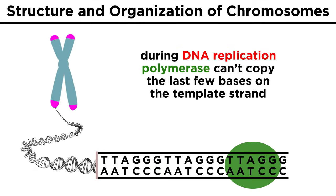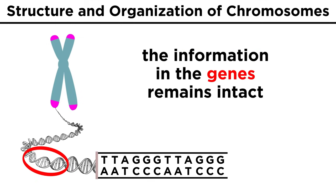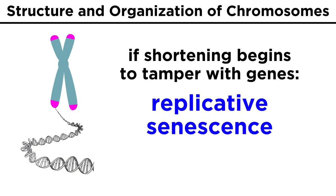This is because with every round of DNA replication, the enzymes involved can't quite copy the last couple of bases, so this extra padding is present so that even after many rounds of replication, the ends haven't shortened so much that the genetic information within an actual gene starts to get eroded away, which would be harmful to a cell. If this does happen, it is called replicative senescence.